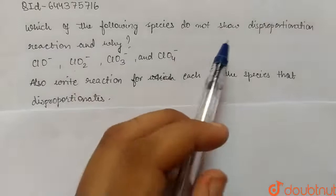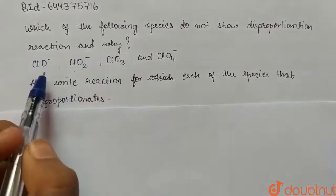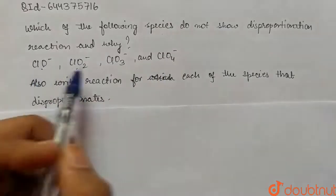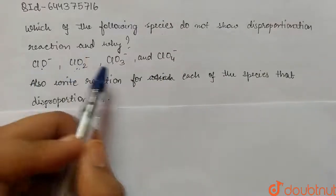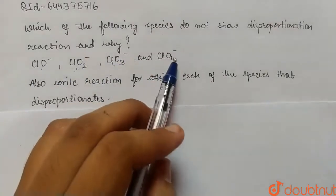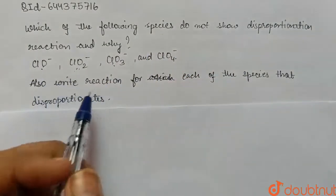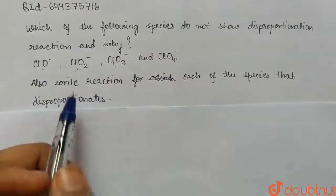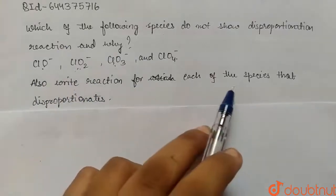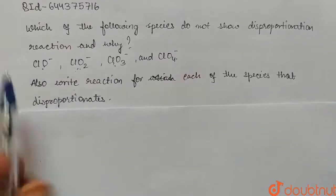Hello students. Today's question is: which of the following species do not show disproportionation reaction and why? We have four compounds: ClO⁻, ClO₂⁻, ClO₃⁻, and ClO₄⁻. We have to tell which does not show disproportionation reaction and why, and write the reaction for each species that disproportionates.